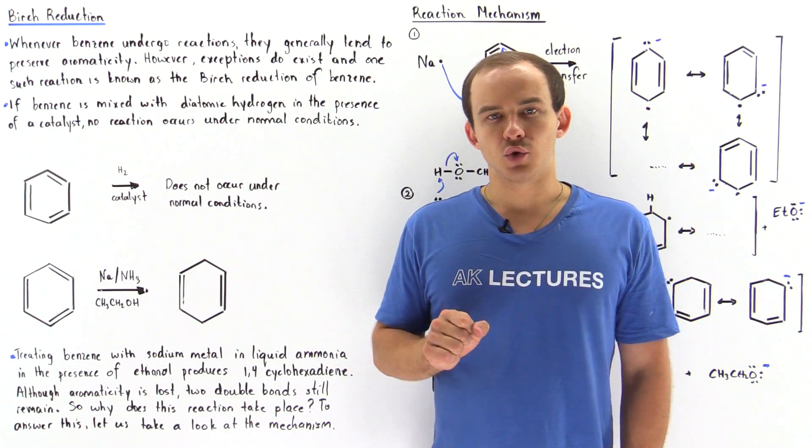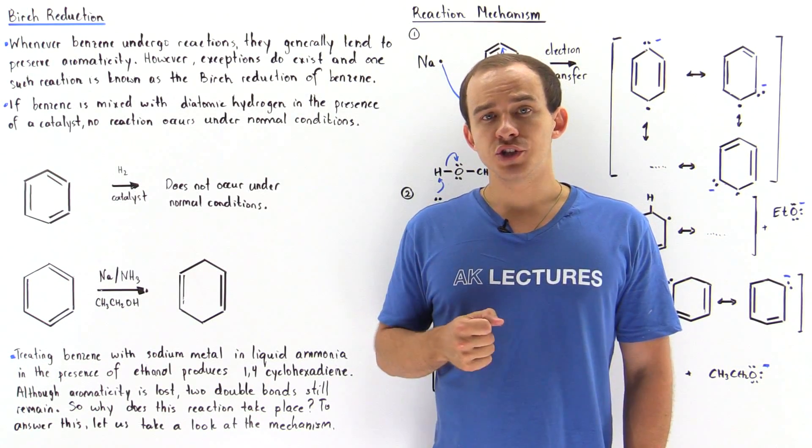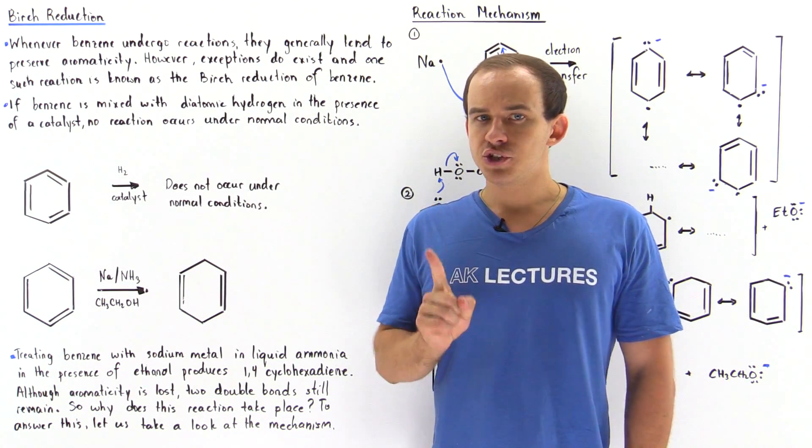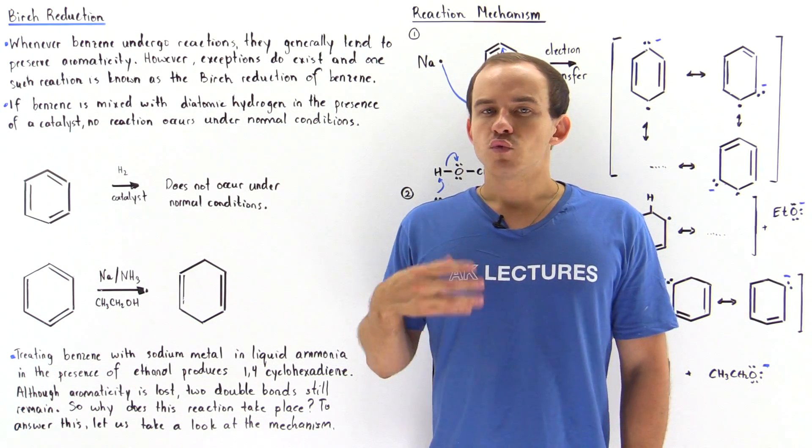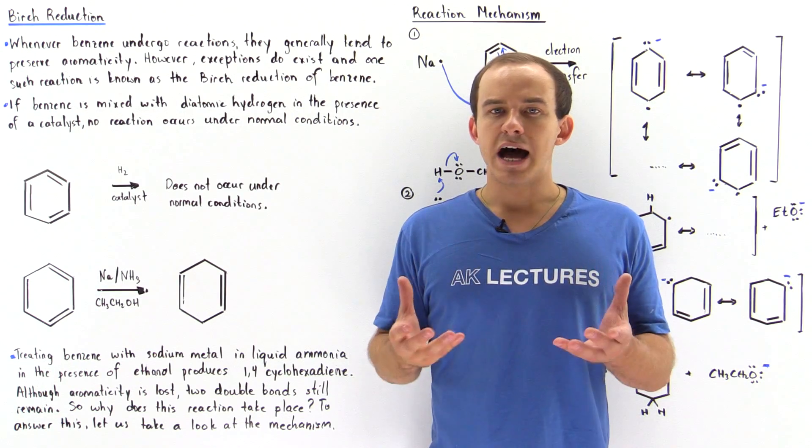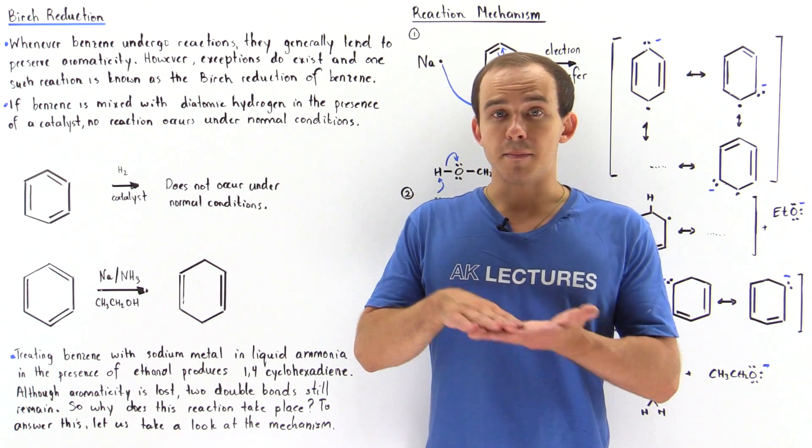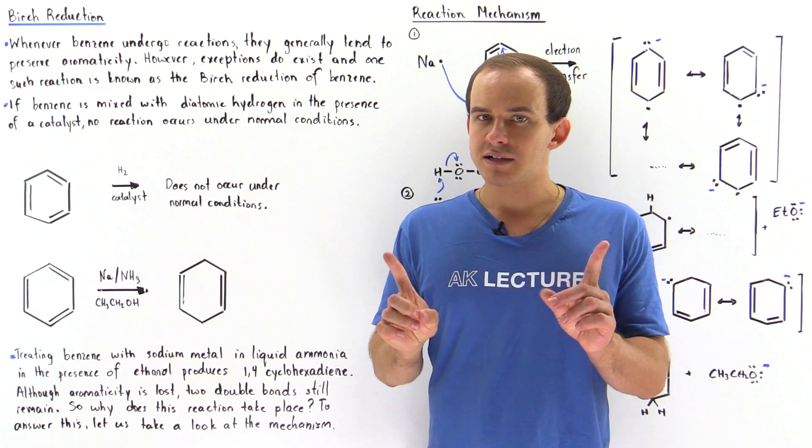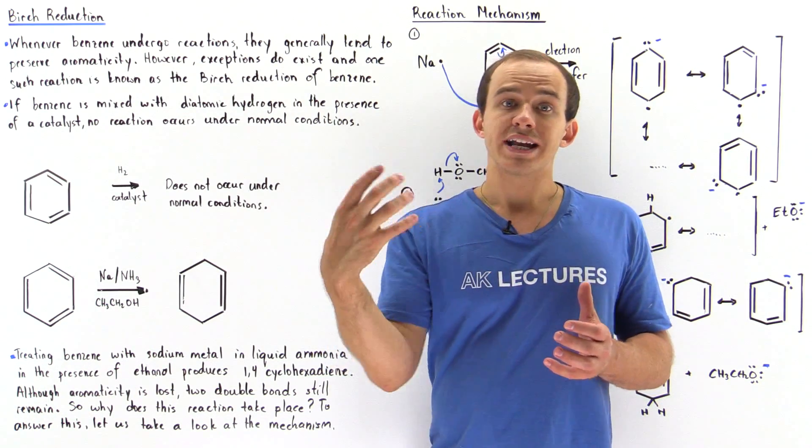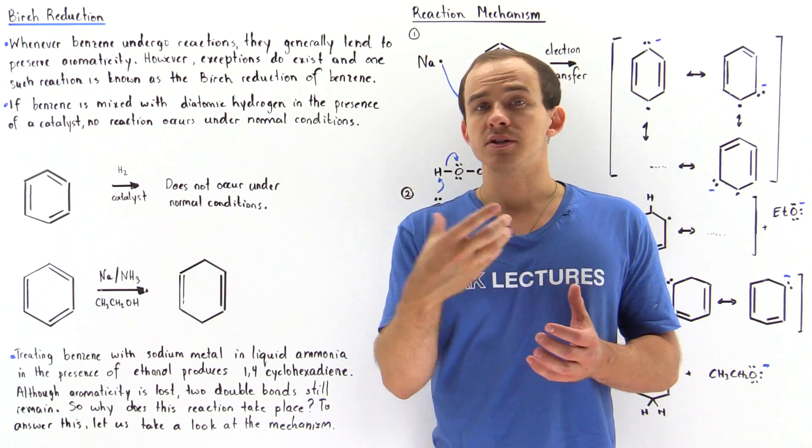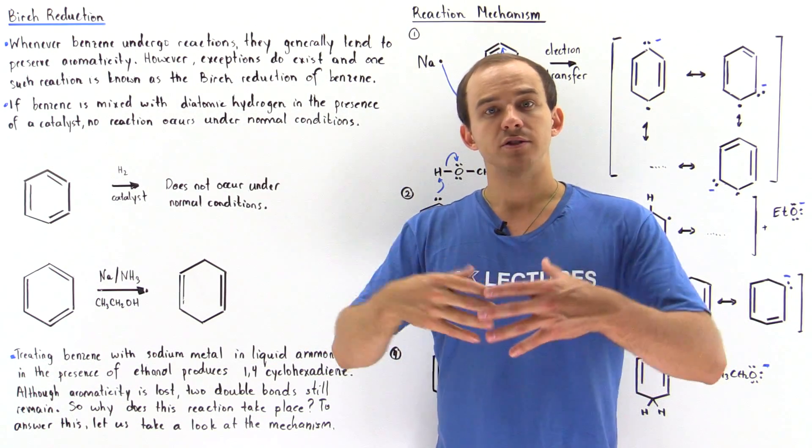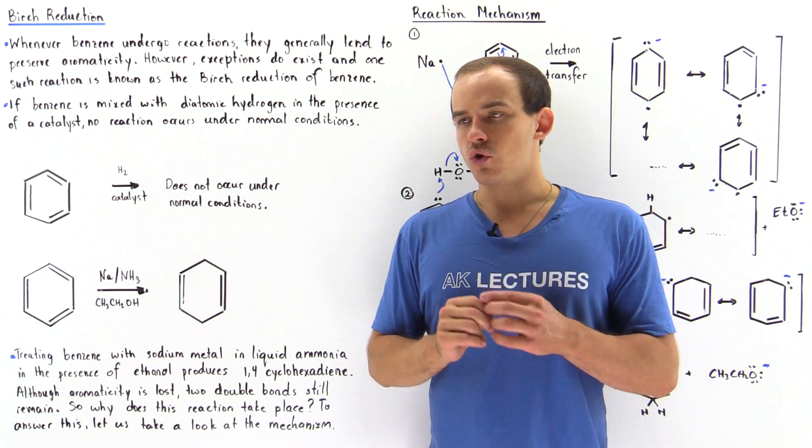Whenever benzene molecules undergo reactions, they usually only tend to undergo those reactions that preserve aromaticity. Remember, aromaticity is a very stabilizing phenomenon. It stabilizes the molecule, lowering its energy because the electron density is allowed to spread out among all the orbitals of all the atoms found in that cyclic planar ring structure of that molecule.